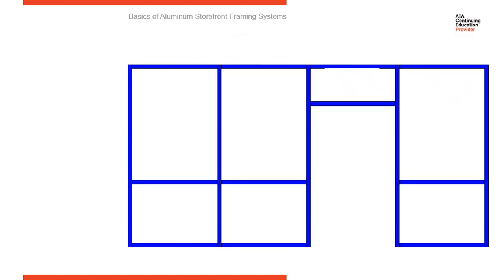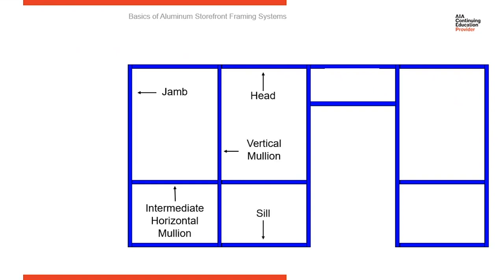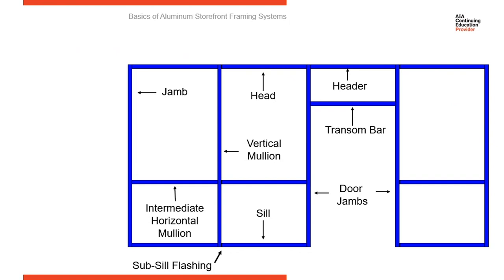Let's look at some simple nomenclature of a storefront elevation. You have jambs at each end. Across the top is the head, and at the bottom is the sill. There are intermediate vertical mullions and intermediate horizontals. Where you have a door, you'll have a door jamb introduced into the elevation. If there's glass above the door, you'll have a transom and then a header at the top. Underneath it all, storefront systems sit in some type of sub-sill flashing.